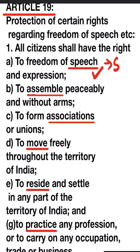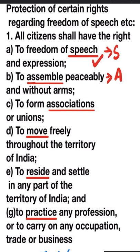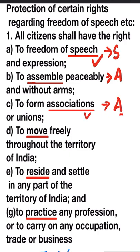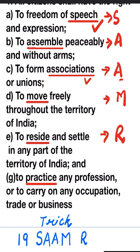To assemble peacefully and without arms — A, from the word 'assemble'. To form associations or unions — we take the keyword 'associations' and letter A. To move freely throughout the territory of India — M. To reside and settle in any part of the territory of India — R, from 'reside'.